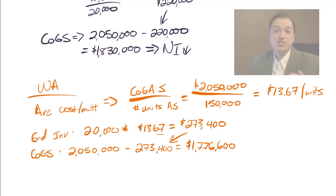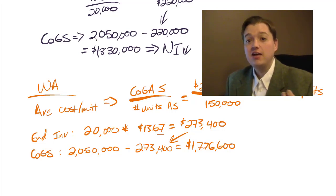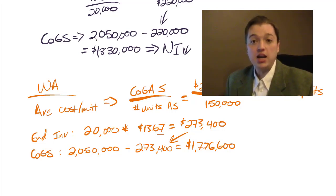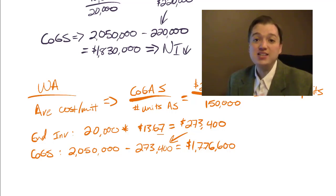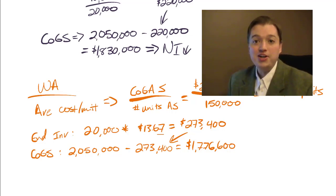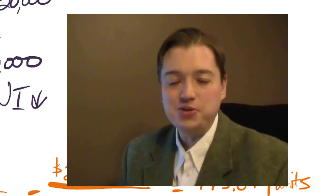Hopefully you noticed a couple of patterns. Cost of goods sold was highest under LIFO and lowest under FIFO. FIFO produced a higher ending inventory value than LIFO, and weighted average fell right in the middle. That's a typical pattern during any inflationary period — prices generally rise, and this pattern holds true under U.S. GAAP. Now that we've done these periodic inventory methods, it's time to move on to perpetual inventory. We'll look at those when we come back.